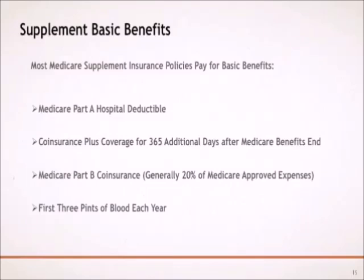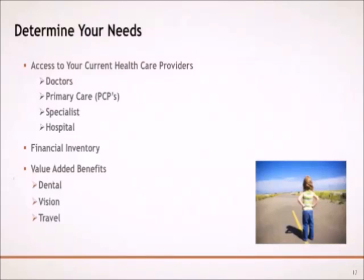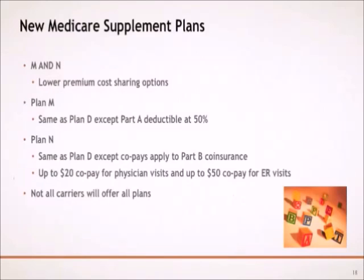Most Medicare Supplement Insurance Policies pay for the basic out-of-pocket Medicare expenses, including the Medicare Part A Hospital Deductible, Medicare's Hospital Co-Insurance, and Part B Co-Insurance — 20% of the Medicare-approved expense. Before selecting and purchasing a Medicare Supplement Plan, you must determine your needs: Do your current health care providers accept Medicare Assignment? Can you financially afford not only the premiums but also the Medicare deductibles, co-insurance, and co-payments if the plan you selected does not cover these expenses? What are the value-added benefits such as dental, vision, and travel coverage?